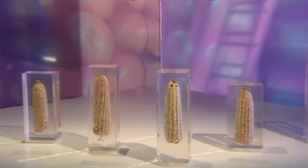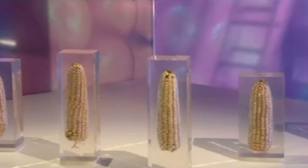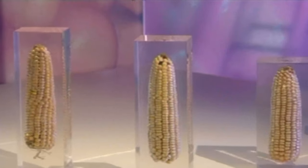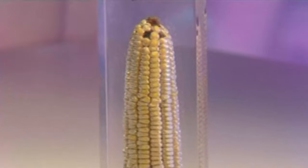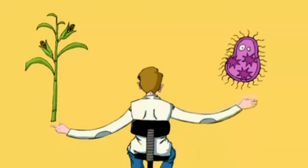En Europe, le seul OGM autorisé en 1997 est un maïs produisant un insecticide. On l'appelle maïs Bt. On a inséré dans ce maïs des gènes de microbes.